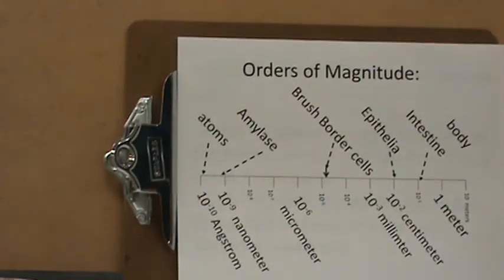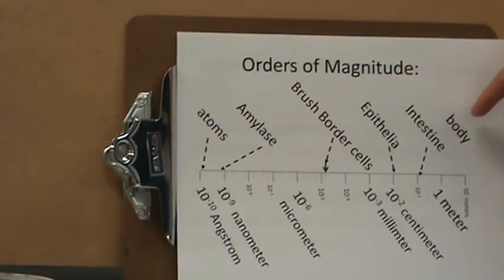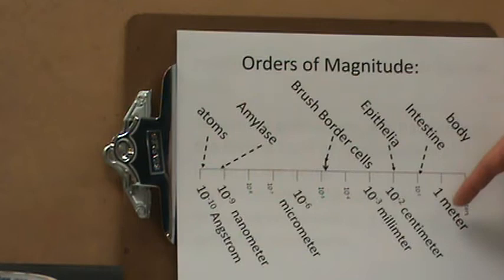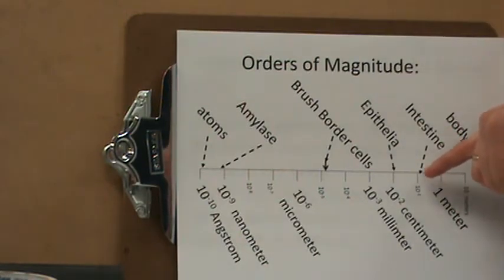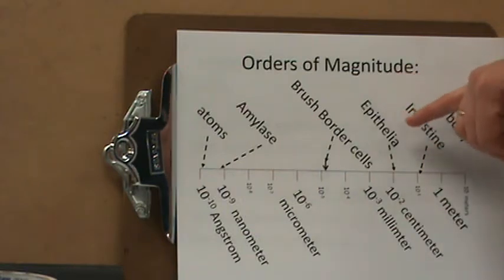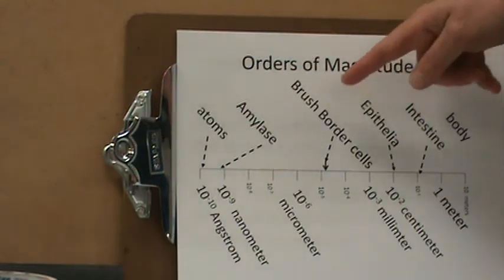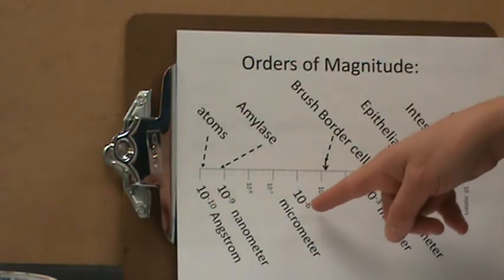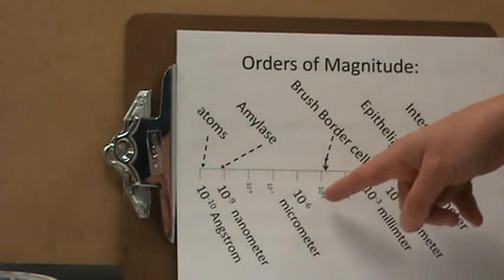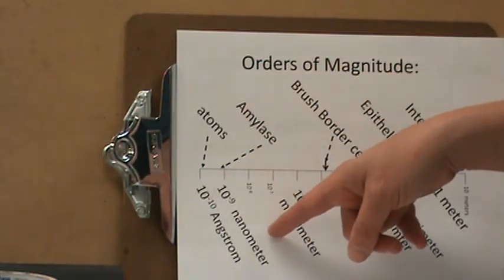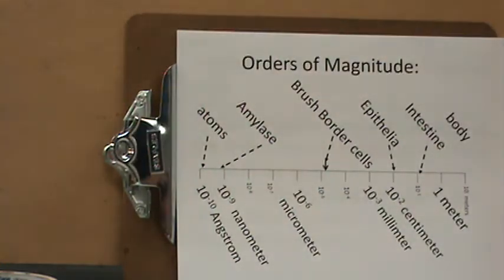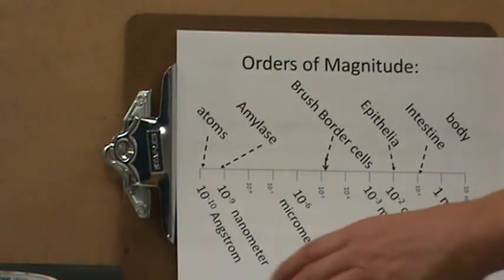Order of magnitude: if the body is about one to two meters, the intestine is about ten times smaller, and the tissue can be described in centimeters. The brush border cells are at a level of ten micrometers. The molecules are on the scale of nanometers — one over a billion of a meter — and a single atom is at the level of an angstrom, or ten to the minus ten meters.